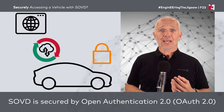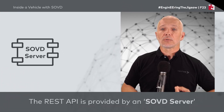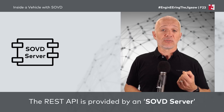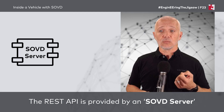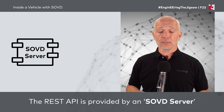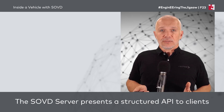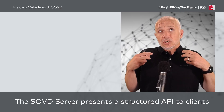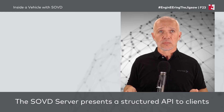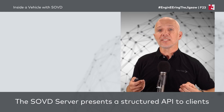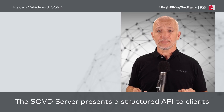What we have inside the vehicle is a function that operates as a web server and provides that REST API. The SOVD server needs to be able to access the content of the vehicle in an easy way in a diagnostic context. The SOVD server presents a structured API to clients — so the REST API is structured.